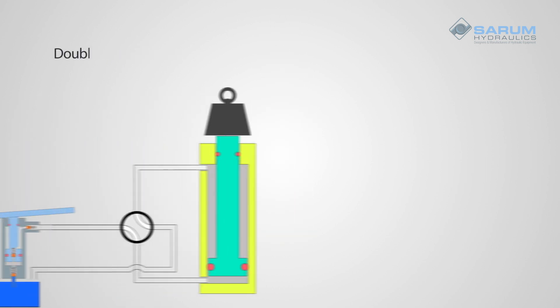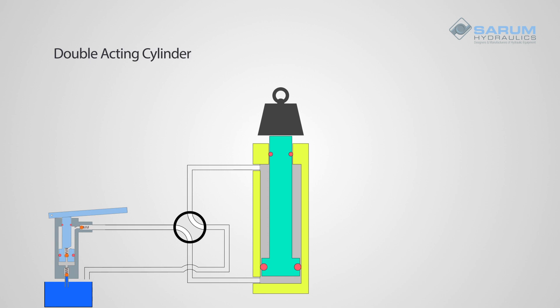A double acting cylinder will allow you to push and pull under hydraulic power. You've got a smaller piston rod with a seal on a piston. You have a cylinder barrel and a piston rod bearing with an extra seal. This forms a second hydraulic chamber.